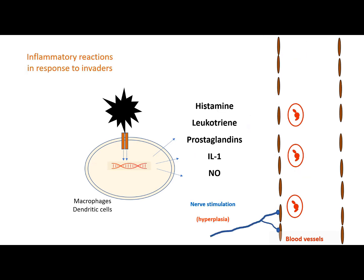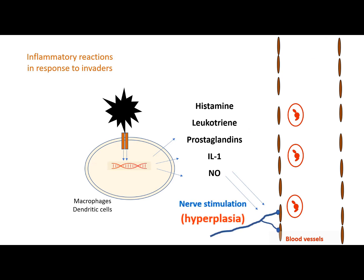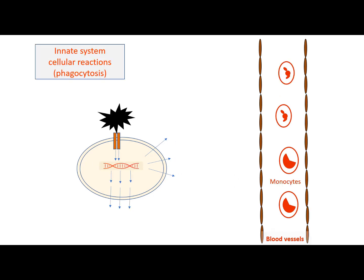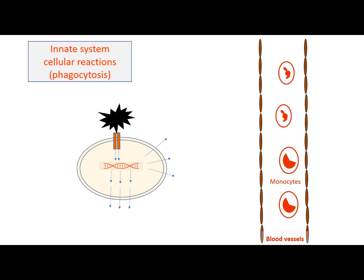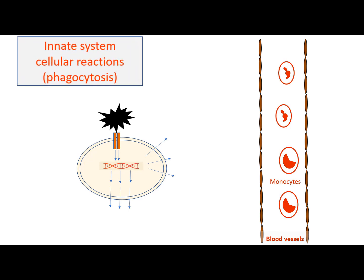The inflammatory mediators also make the nerves more sensitive to pain, a state known as hyperalgesia, which represents the fourth cardinal sign of inflammation. Now let's focus on one of the main innate immune system cellular reactions, which is phagocytosis.